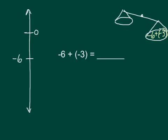When you're combining the same signs, a negative 6 plus a negative 3, it's like being down negative 6 on the number line and going down 3 more. So you would end up at a negative 9. So negative 6 plus negative 3 is negative 9.